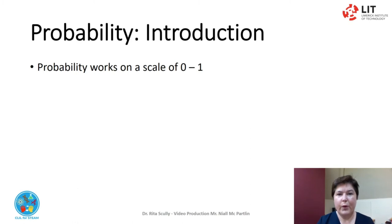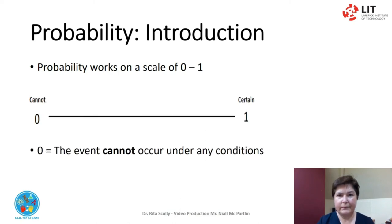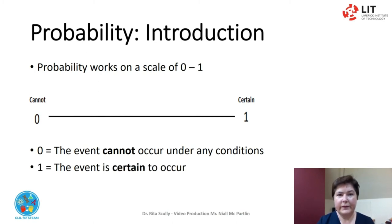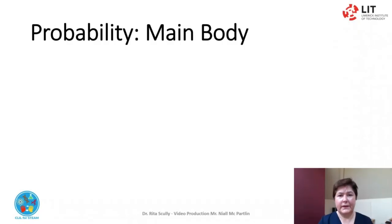Probability works on a scale of 0 to 1. At 0, the event cannot occur under any conditions. At 1, the event is certain to occur. Probability can be shown on the probability line. Probability does not tell us exactly what will occur — it is just a guide.